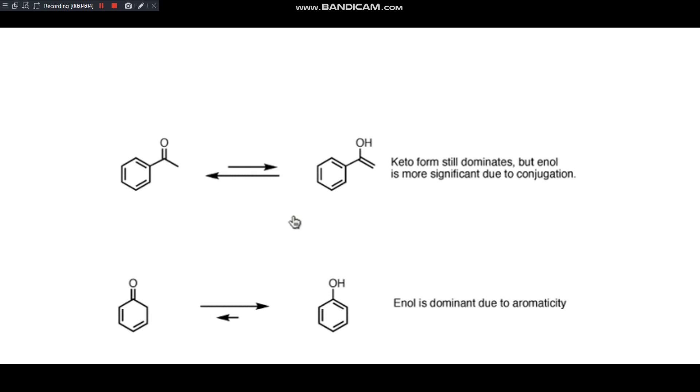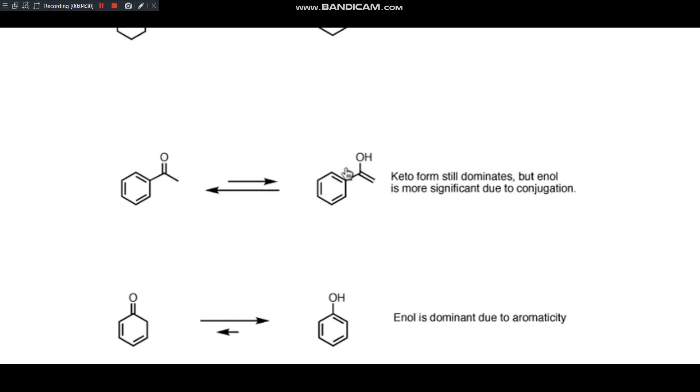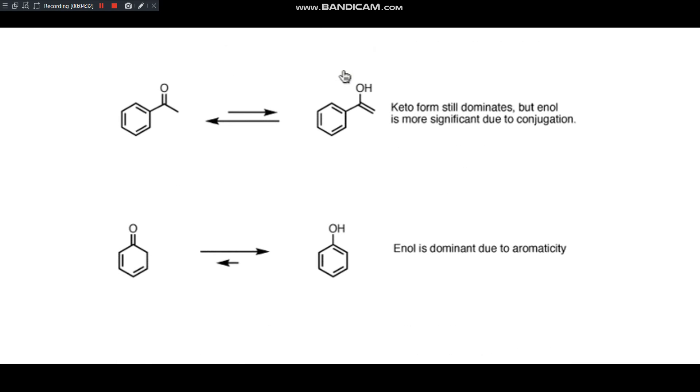So the second thing I want to point out is that this enol form is actually going to be more stable than an average enol form. And why is that? Well, because it is in conjugation with the benzene ring. And this is a stabilizing factor. So this relationship here might not be 5,000 to 1. It might be a little bit less. It's hard to gauge exactly. But you would have a greater proportion of the enol in this case than you would in this above case. Okay. Conjugation is a stabilizing thing for alkenes.